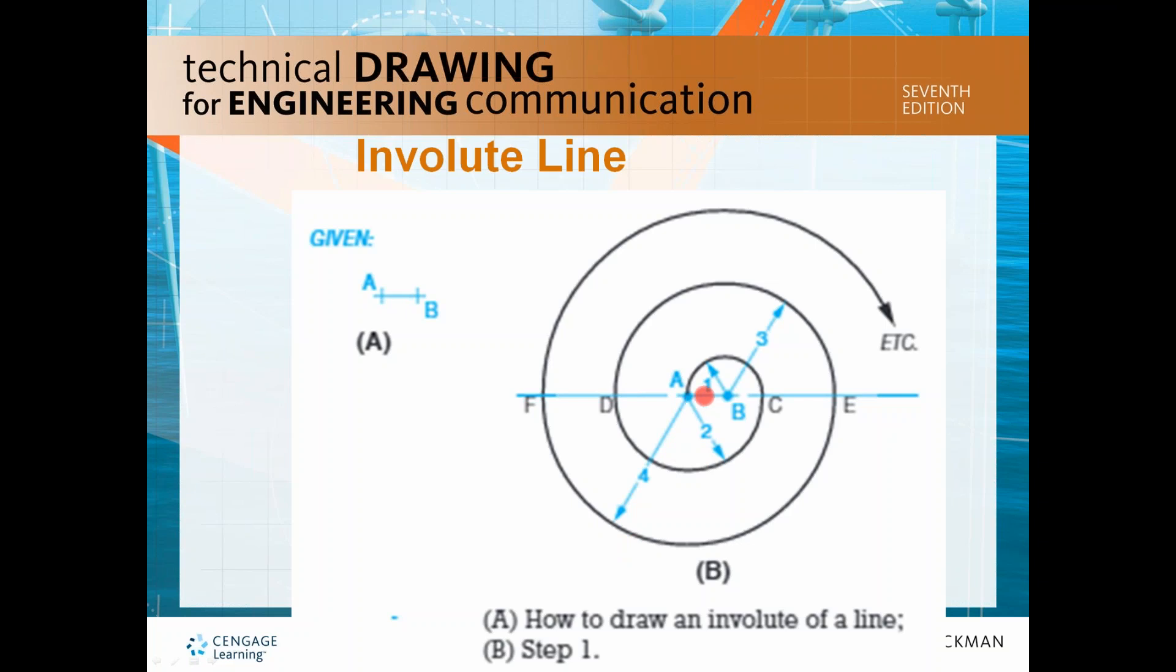So the radius 1 is the length of AB. Then you're going to double the length AB for 2, and then triple the length AB to get you 3, and 4 times the length of AB will give you this radius 4.